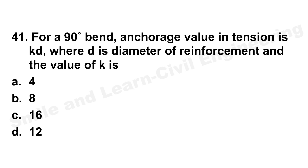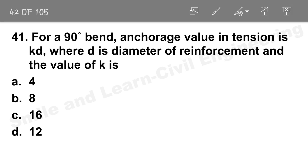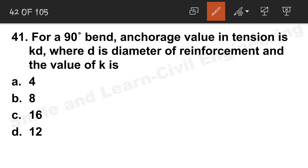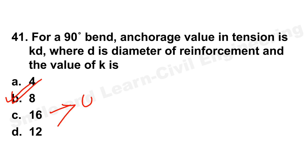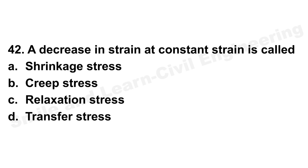Question 41: For a 90-degree bend, the anchorage value in tension is 8d. Option B is the correct answer. For a U-hook, it is 16d. Question 42: Decrease in stress at constant strain is relaxation stress; decrease in strain at constant stress is creep stress. Just remember this distinction.